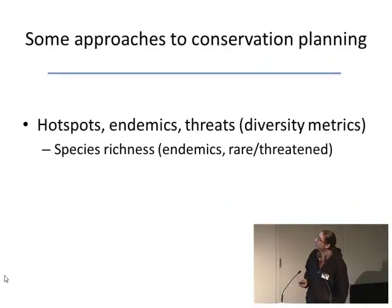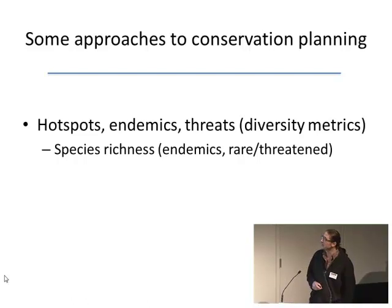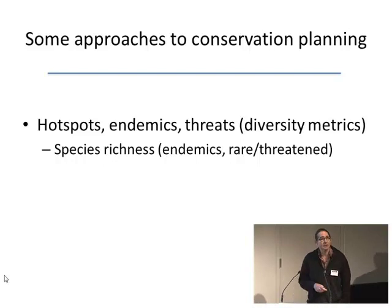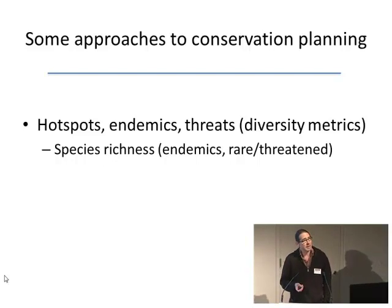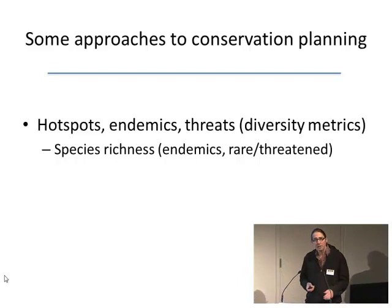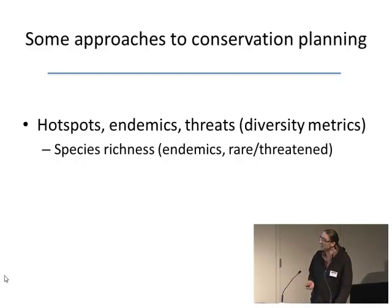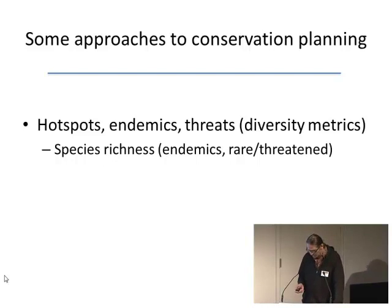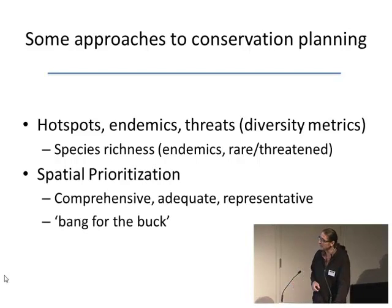Some approaches to spatial conservation planning include biodiversity hotspots, endemics, and threats — areas of increased species richness or increased endemics, or localities where there's lots of rare or threatened species, or where particular habitats are particularly vulnerable. But these kinds of things aren't entirely satisfactory on their own because, for example, centers of species richness don't often match up with centers of endemism. So it becomes difficult to imagine what we use in different situations.